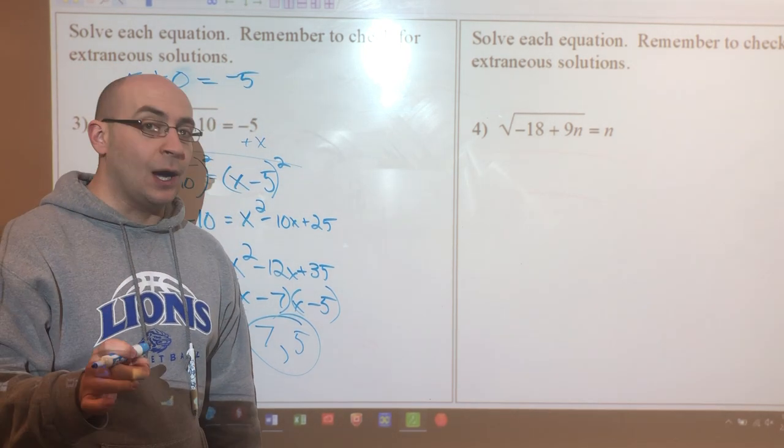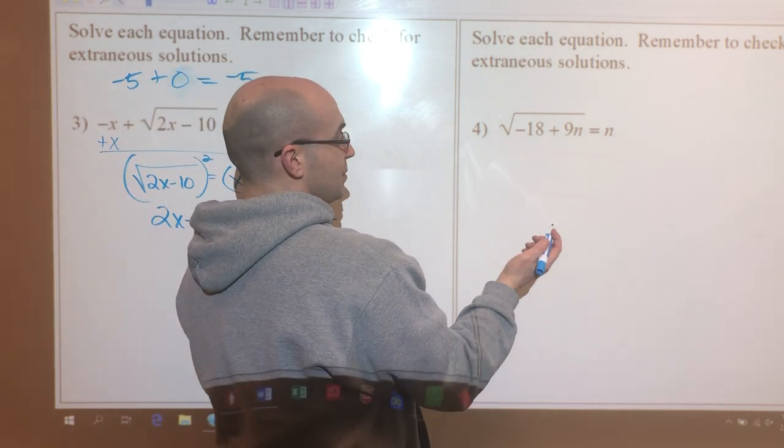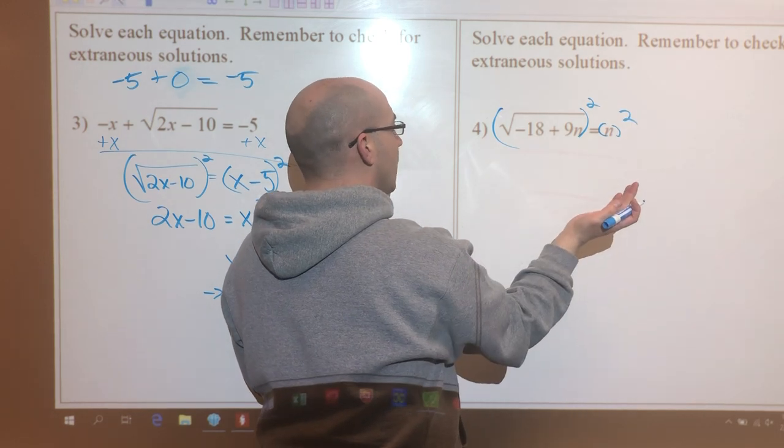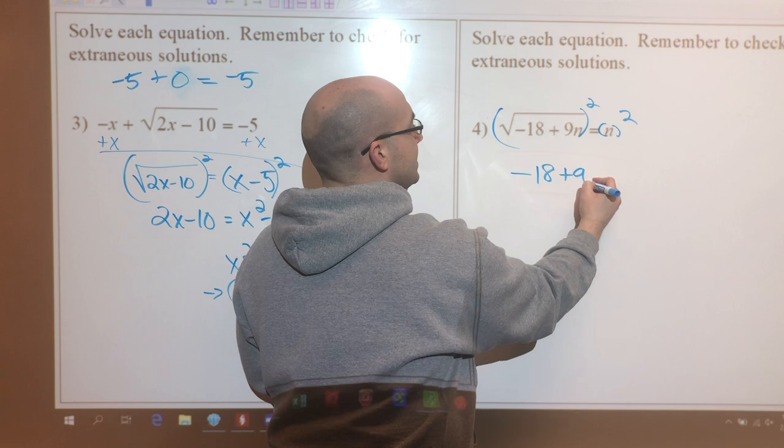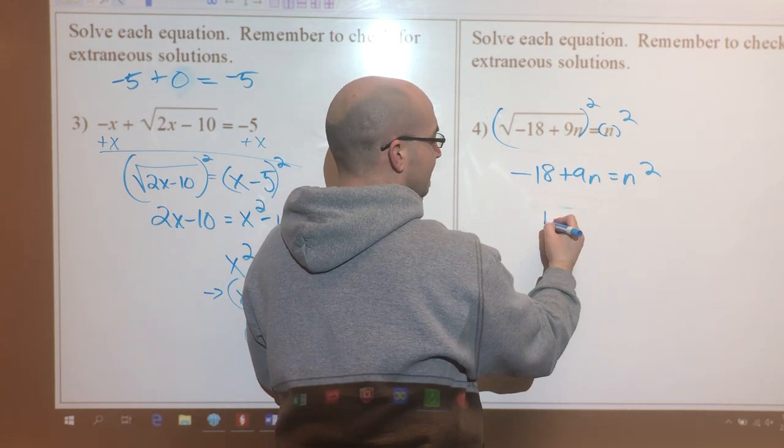Okay, let's try the next one. This one's actually pretty simple. I'm squaring both sides already, no FOILing necessary. Negative 18 plus 9n equals n squared.